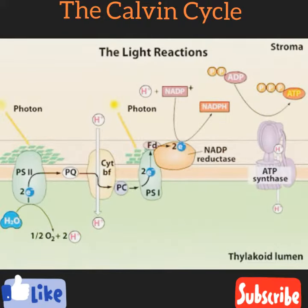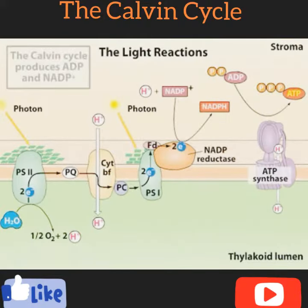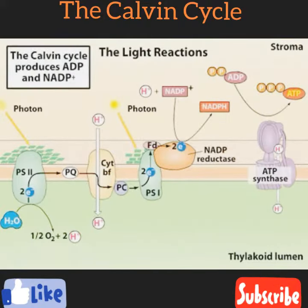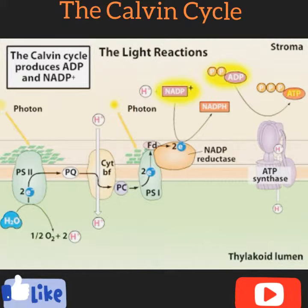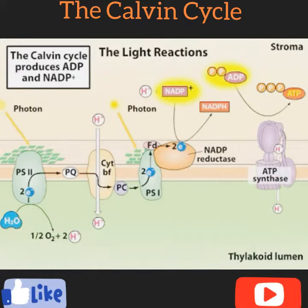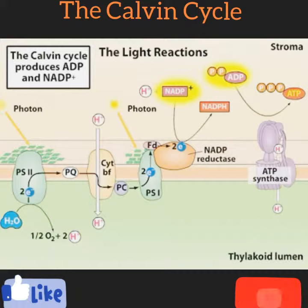Notice that the Calvin cycle produces ADP and NADP+, both of which are needed for the light reactions of photosynthesis. Thus, the two pathways — the light reactions and the Calvin cycle — are tightly coupled.